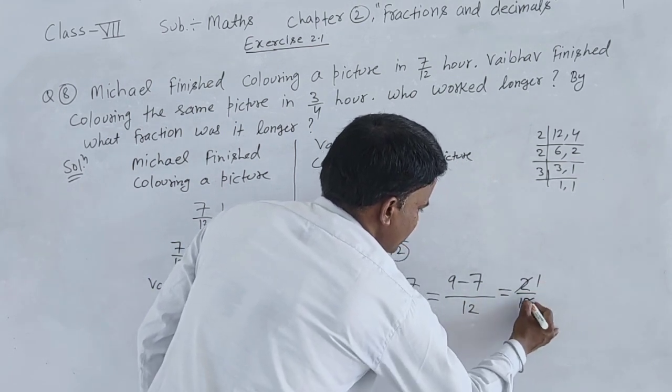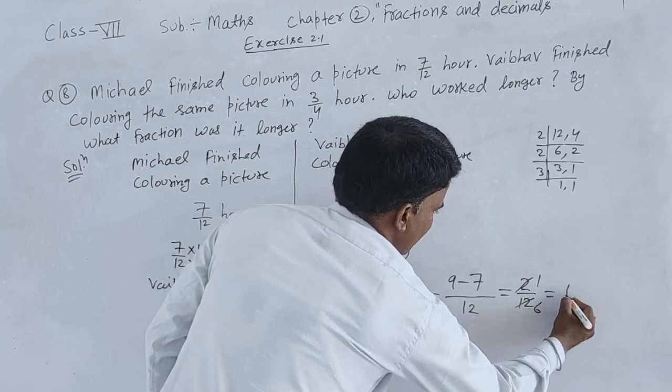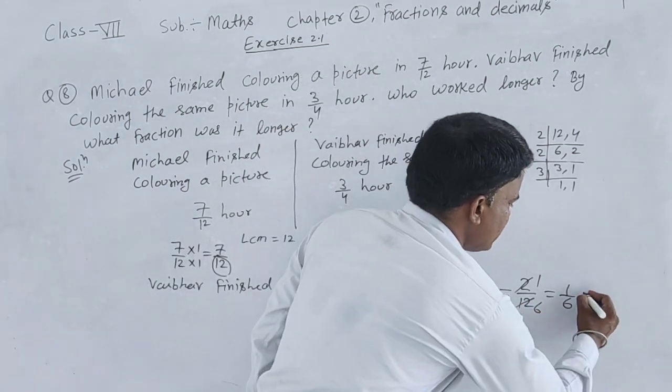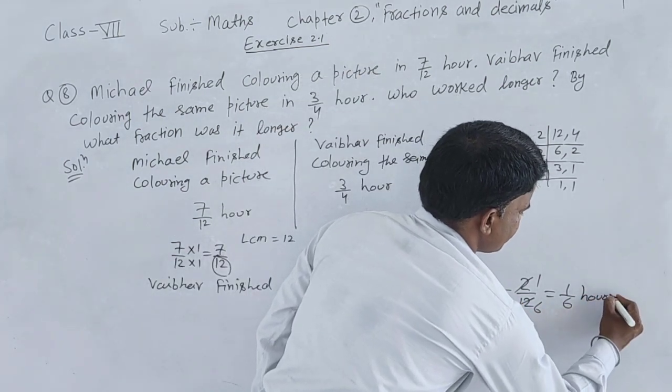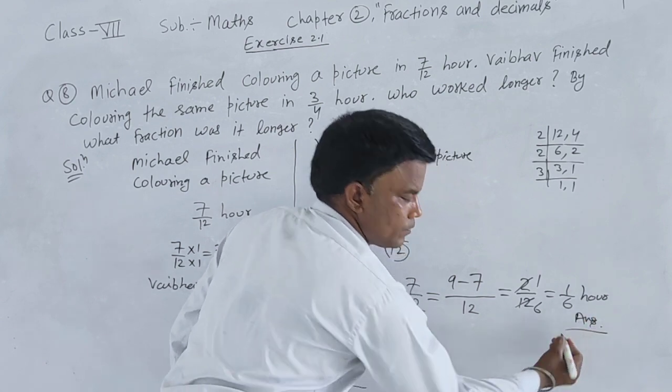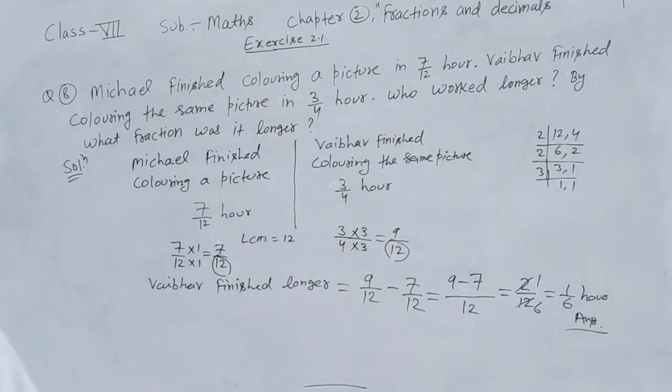Simplifying 2/12: dividing both by 2 gives 1/6.